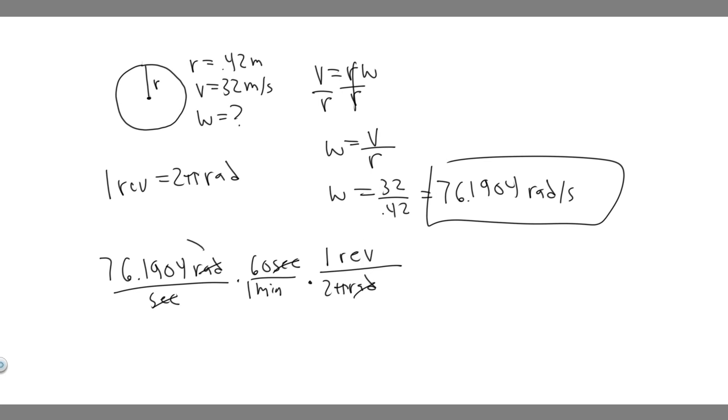So basically you just do 76.1904 times it by 60 and then divide by 2 pi. And you'll have revolutions on top and minutes on the bottom, which is what we want. So go ahead and plug this in.